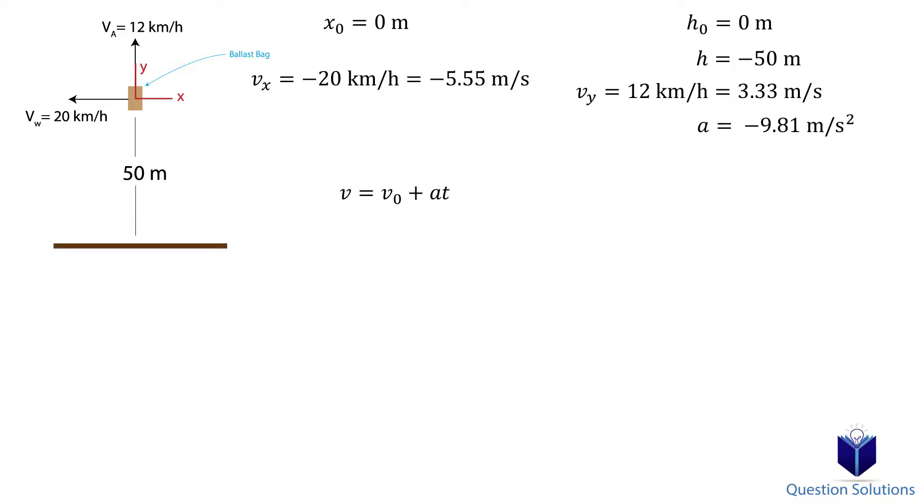Let's use this equation first. We will consider up to be positive, and to the right as positive. We can substitute what we know in. Let's write another equation. Again, substitute what we know in. We can solve for t, and we get t equals 3.55 seconds.